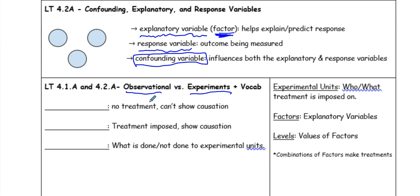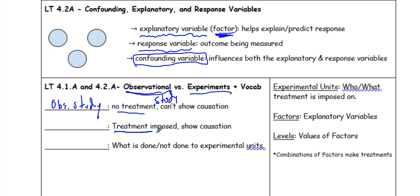Another thing you have to know is the difference between an observational study and an experiment. When there are no treatments and you can't show causation, that's known as an observational study — you take a bunch of information, there's correlation involved, and you look at the relationship between the explanatory and response variable. When treatments are imposed on experimental units, that can show causation — that's what we call an experiment.